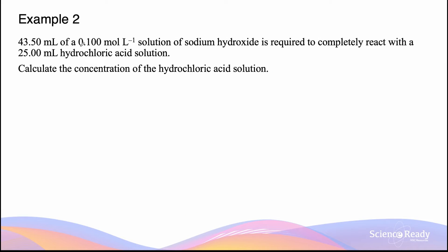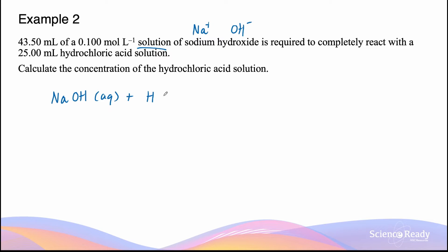43.50 milliliters of a 0.1 mol per liter solution of sodium hydroxide is required to completely react with a 25.00 milliliter hydrochloric acid solution. Calculate the concentration of the hydrochloric acid solution. Sodium hydroxide is an ionic compound — sodium is in group one giving Na⁺, and hydroxide is the polyatomic ion OH⁻. Their one-to-one charge ratio gives the empirical formula NaOH, in aqueous state. Hydrochloric acid is a covalent compound formed between two non-metals with the formula HCl, also in solution.